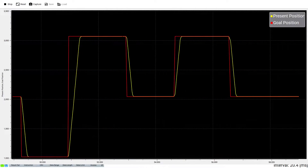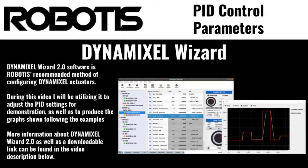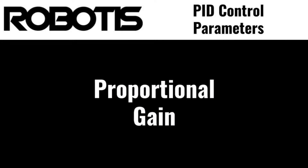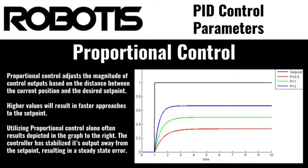Now, let's take a look at Dynamixel Wizard and adjust these settings to see how they affect the performance of our Dynamixel. Feel free to follow along with these tests at home using your own Dynamixel actuator. The proportional gain is a measure of the actuator's response to the difference between the goal position and its actual position — in other words, the aggressiveness of seeking the goal position.